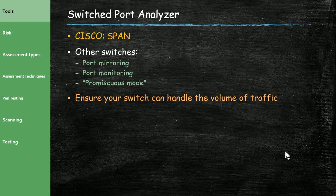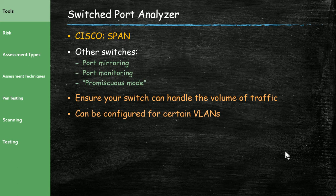Make sure your switch can handle the volume of traffic — in a 48-port data center switch with gigabit ports all in use, that's a tremendous amount of traffic. In virtual environments using VMware, you can configure a virtual machine to be in promiscuous mode to see all traffic. You can also configure SPAN for just certain VLANs, so if you're only concerned with one VLAN, you monitor only that traffic.